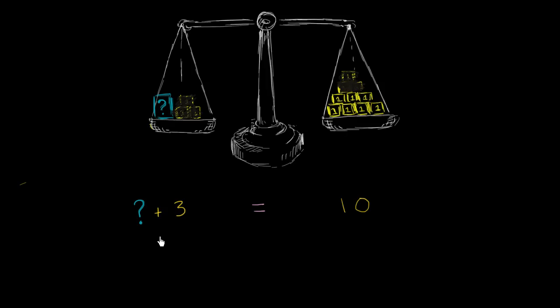So mathematically, we'll do the exact same thing here. We will remove 3, not from one side. If we remove 3 from one side, then it wouldn't be equal anymore. We need to remove 3 from both sides. So we need to subtract 3 from both sides of this equation in order to keep the scale balanced.